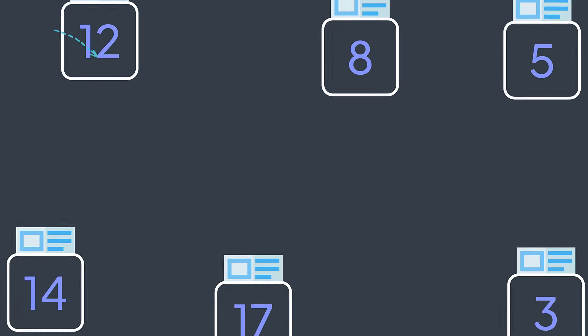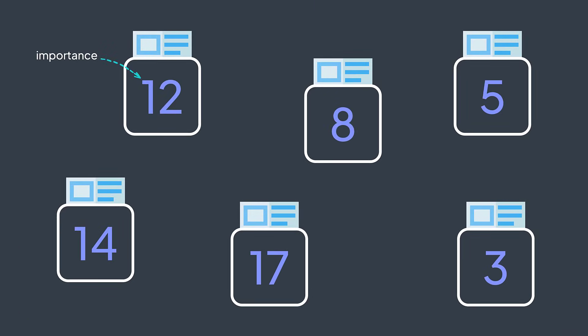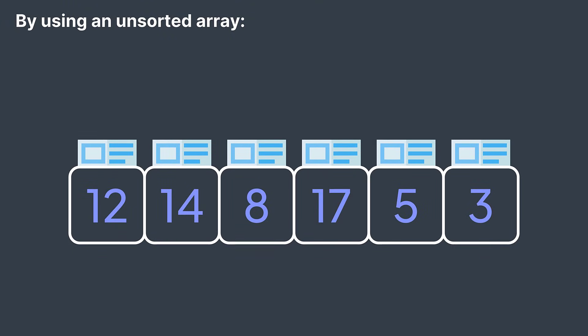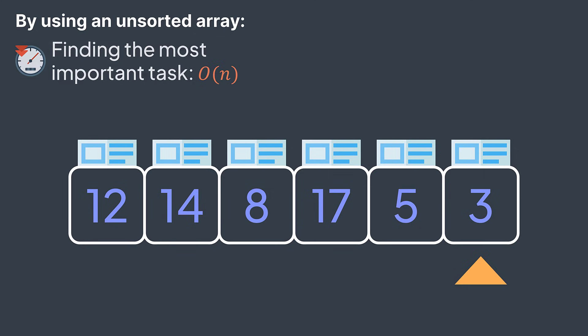Imagine that you have a set of tasks of different importance, and you want to store them in a way that will always let you quickly access the most important one. If you just throw them in an array, every time you want to find the most important task, you'd need to traverse the whole array to find it — an operation whose time complexity is O(n), which is slow.